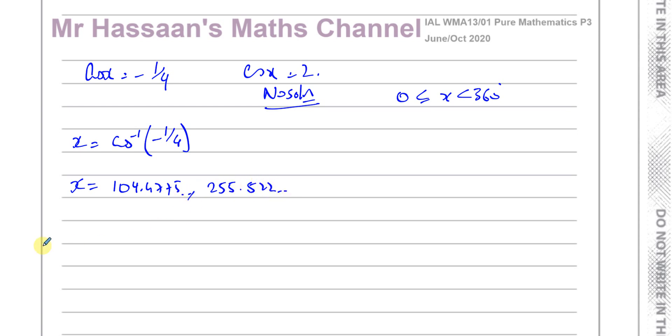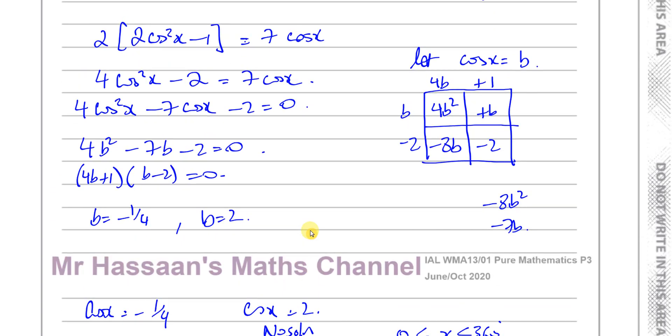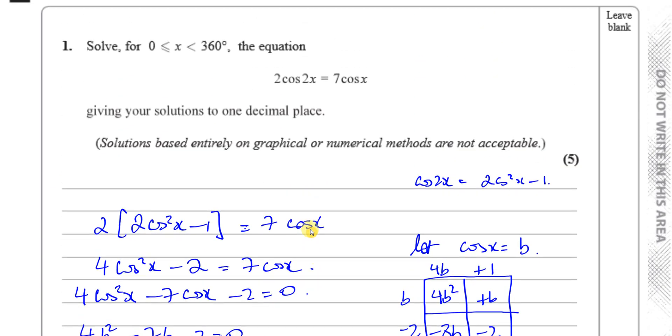Which is 255.522. We want to round them to one decimal place so it's 104.5 degrees and 255.5 degrees are the two solutions. There won't be any other solution in this range. All the other solutions are 360 degrees away from these two angles which are going to be outside of our given range. So those are the only two solutions. The cosine x equals 2 part gave us no solution so therefore that's the answer to question number one.